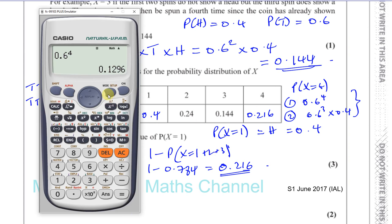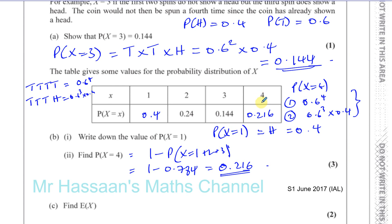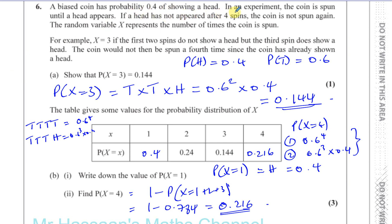So adding 0.6 to the power of 4 and 0.6 cubed times 0.4 gives us exactly the same answer. There are two ways of having four throws: one is getting all four tails, and the experiment stops because after four spins the coin is not spun again; the other is getting three tails and then a head on the fourth throw. These two outcomes combine to give 0.216.